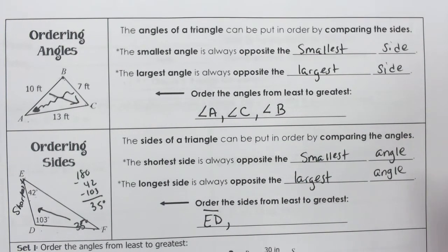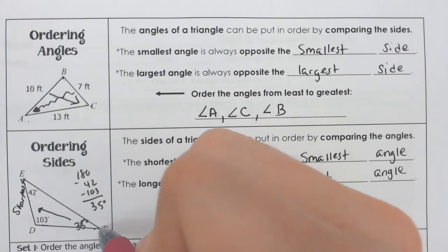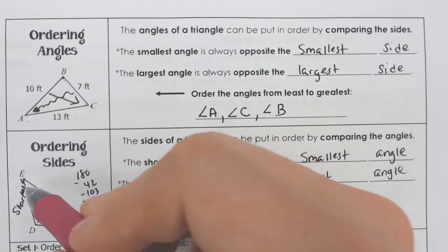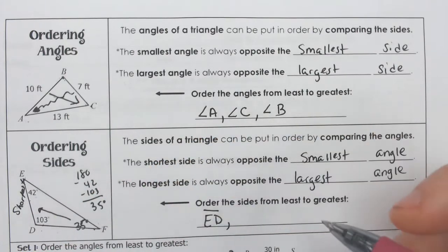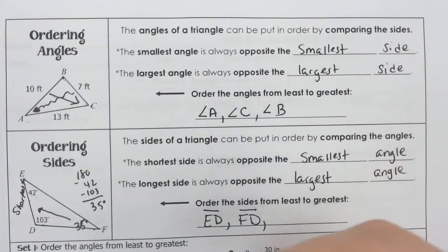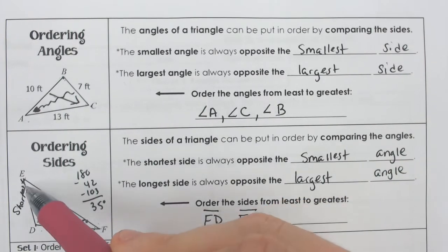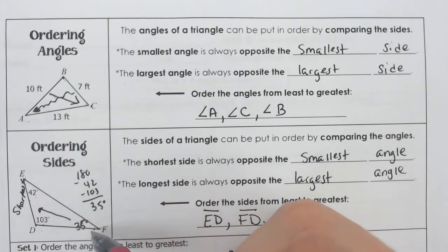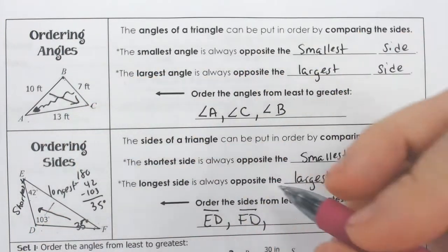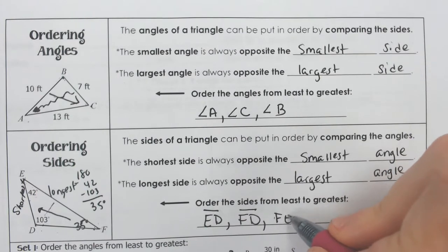What's the next shortest? That's going to be side FD because side FD is opening up from the next biggest angle, which was 42. And last but not least is F all the way to E. That is by far the biggest. It is across from the 103. That is going to be the longest side, and that is side FE.